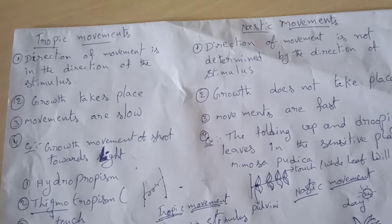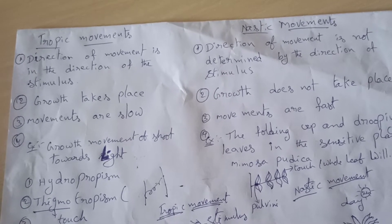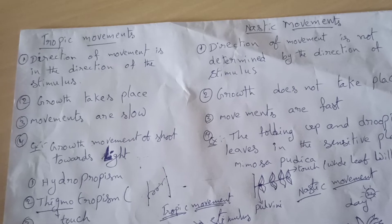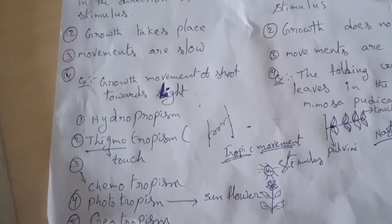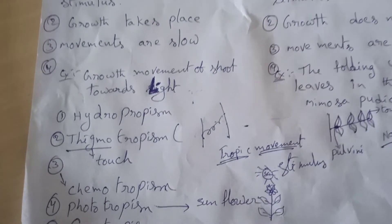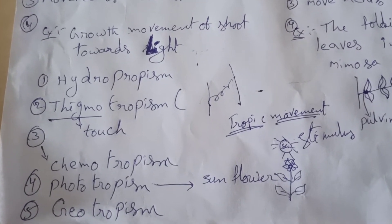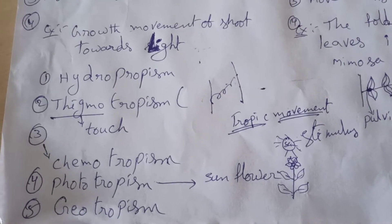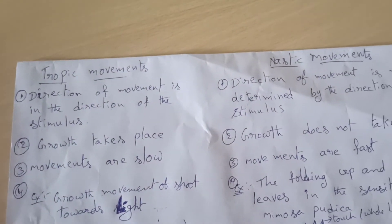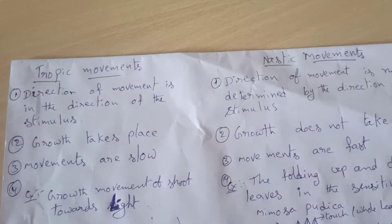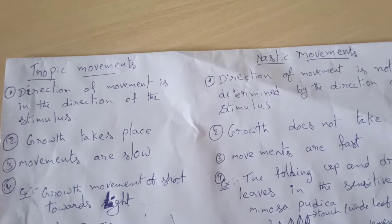In our 10th class textbook, Tropic movements have some types: Hydrotropism, Thigmotropism, Chemotropism, Phototropism, and Geotropism. There is a difference between Tropic movements and Nastic movements.